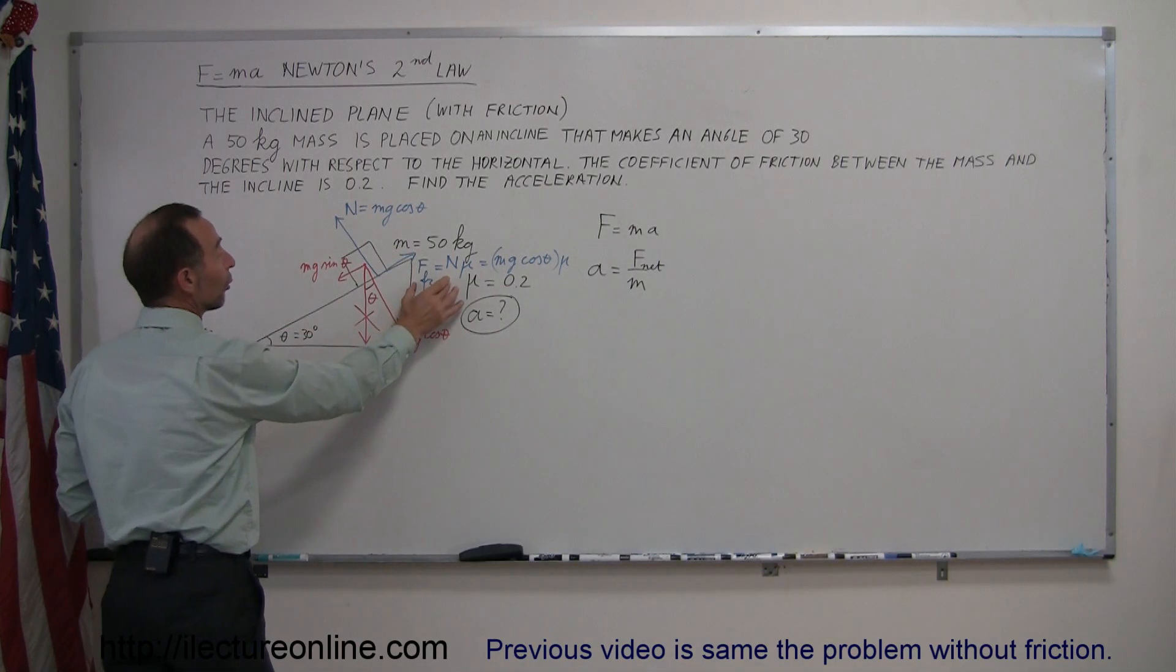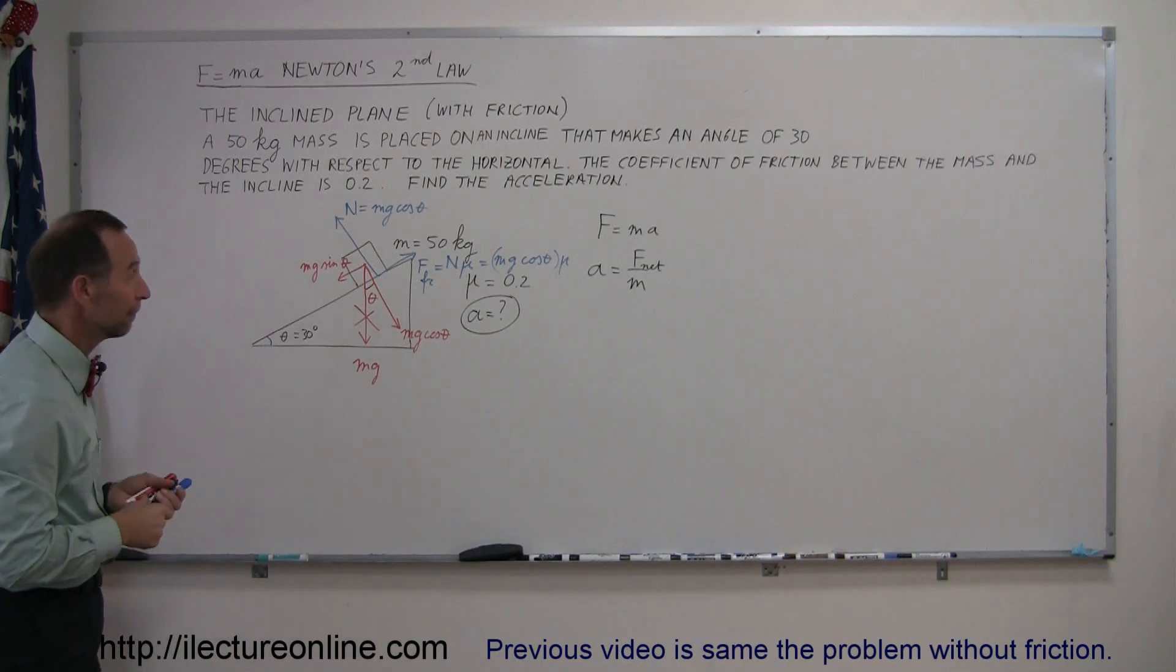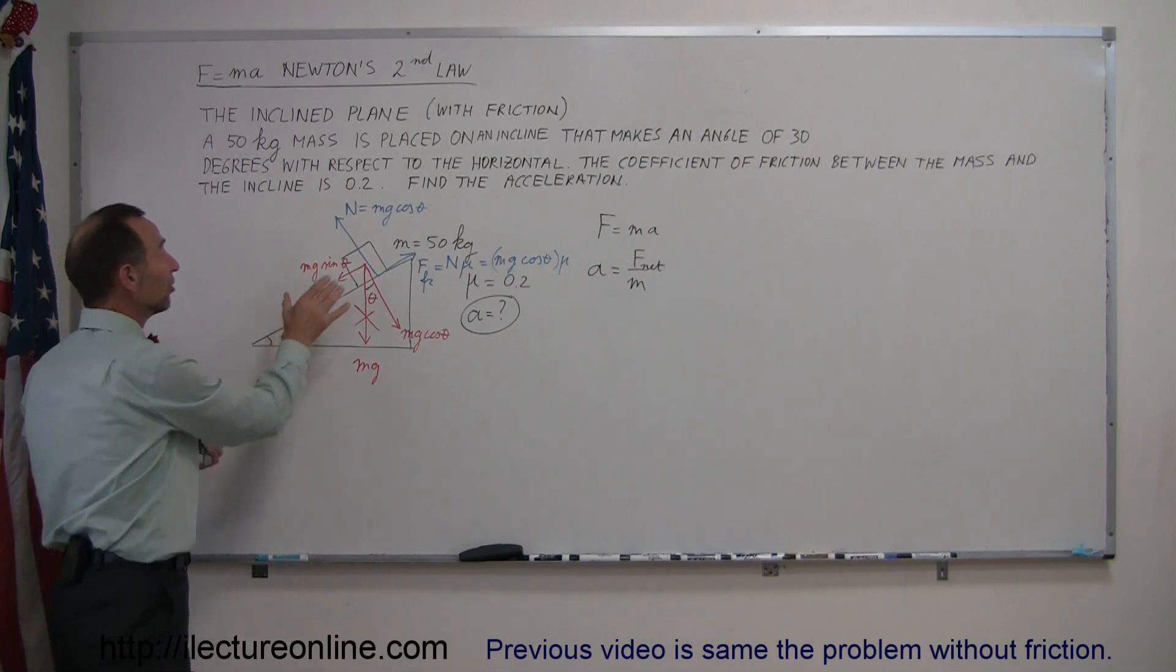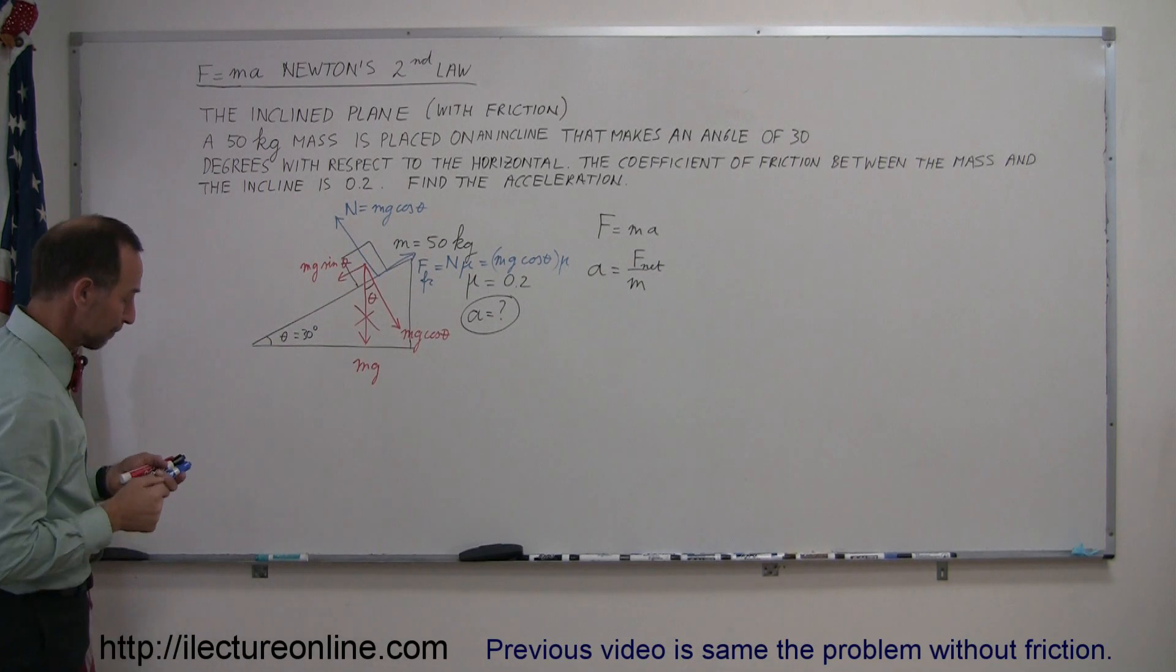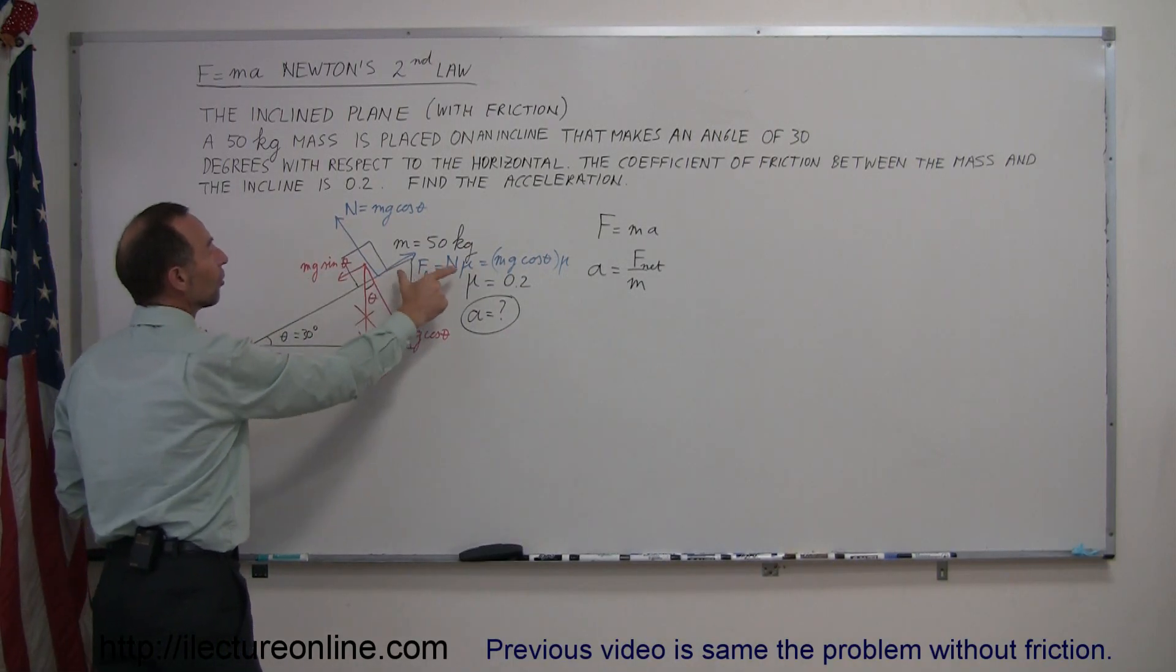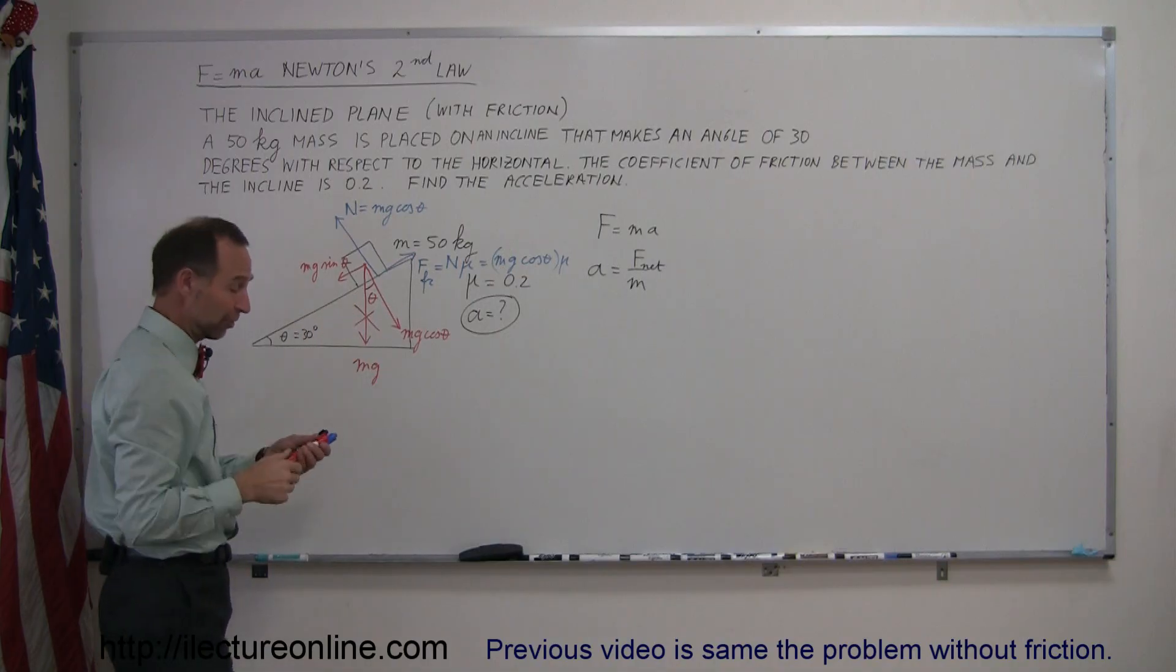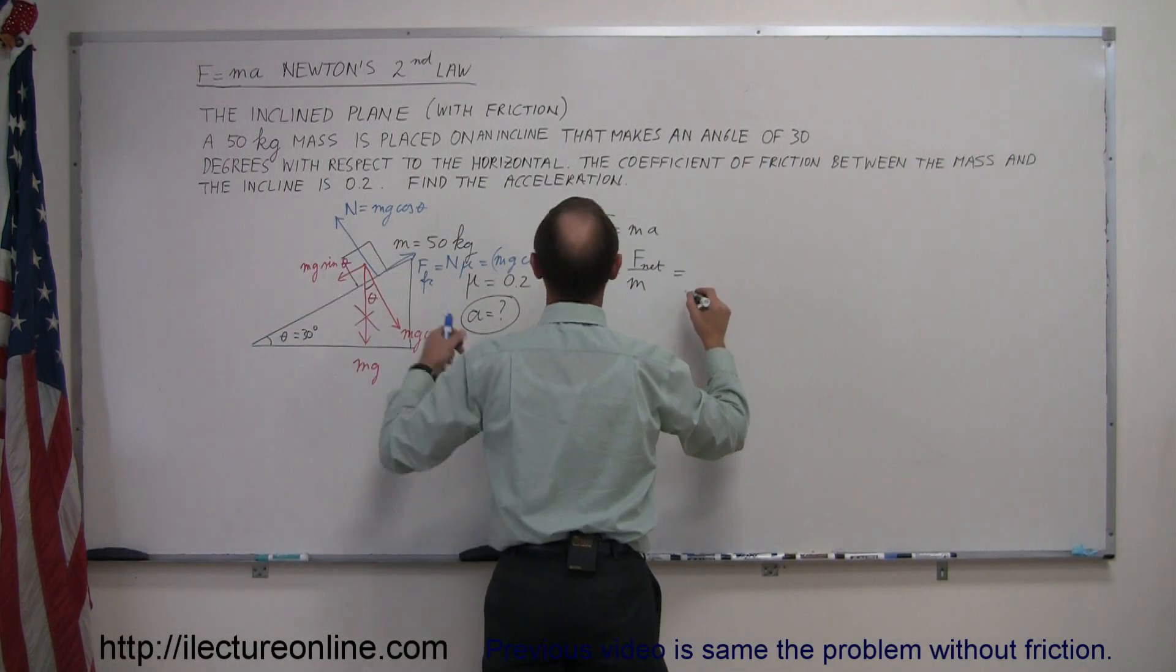Now, obviously, if this friction force is as large as the mg sine theta, then the object will not move at all. It will stay there. But if mg sine theta is bigger than the friction force, the object will then slide down the incline. So, since this is aiding the acceleration, and this is opposing the acceleration,